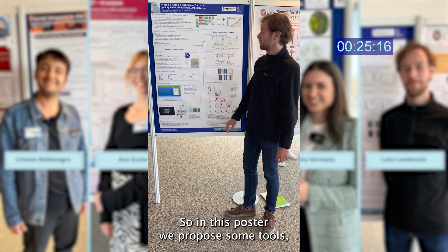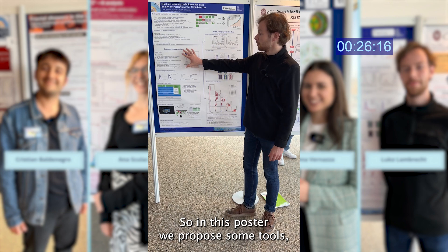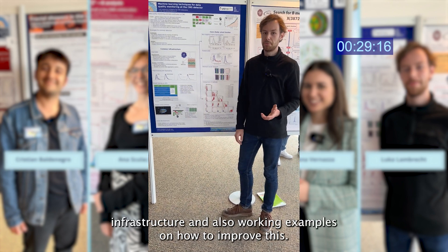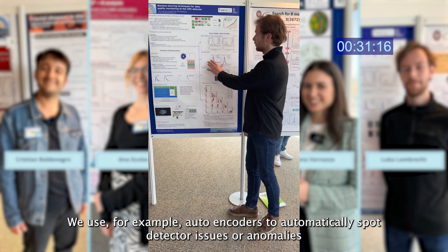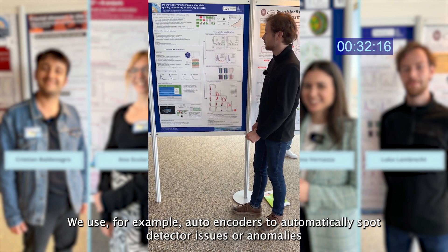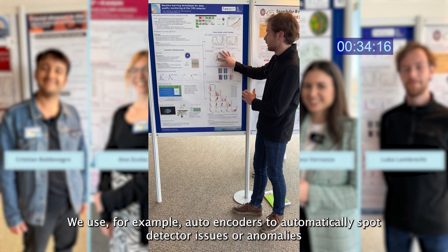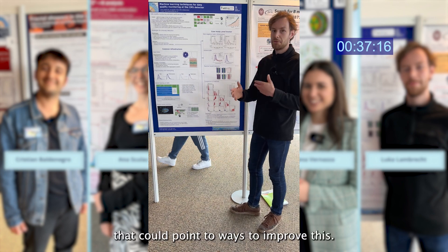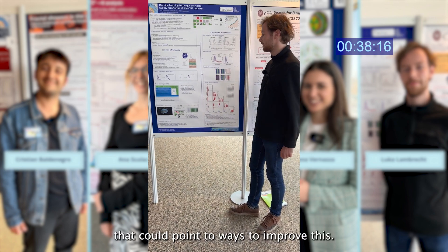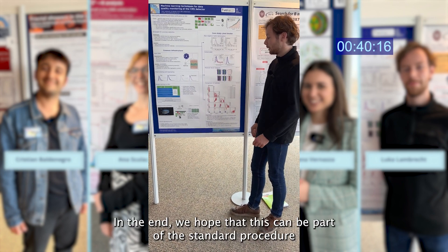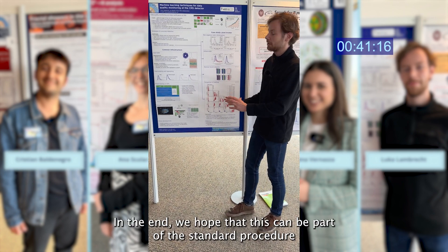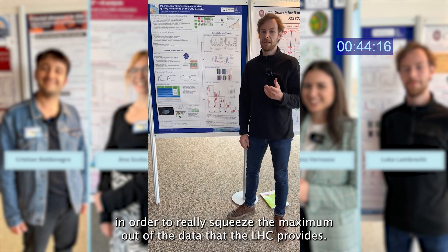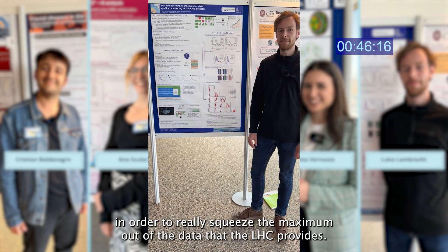In this poster we propose some tools, infrastructure, and working examples on how to improve this. We use, for example, autoencoders to automatically spot detector issues or anomalies. In the end, we hope that this can become part of the standard procedure in order to really squeeze the maximum out of the data that the LHC provides.